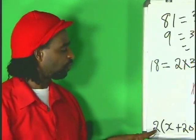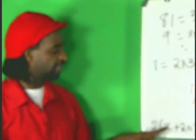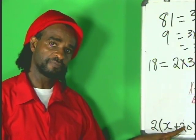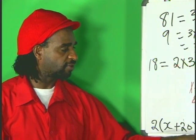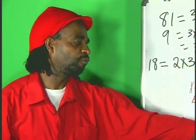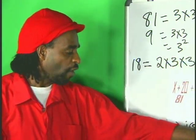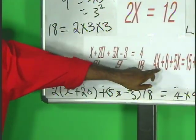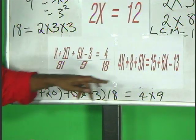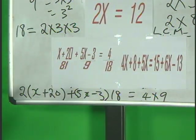there are going to be terms in front of your brackets. So, what you do, use this term to multiply x and 20. Use 18 to multiply 5x minus 3. And clearly, use 4 to multiply 9. When you do that,